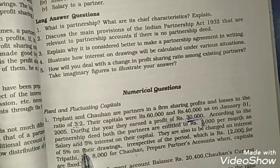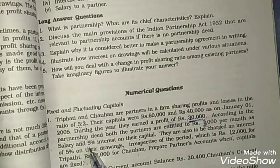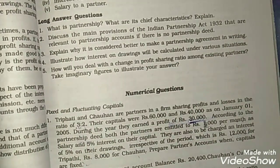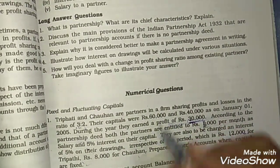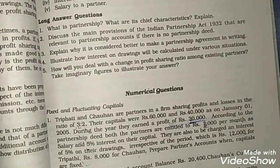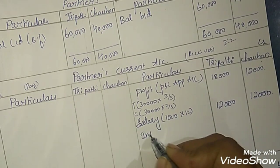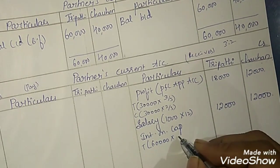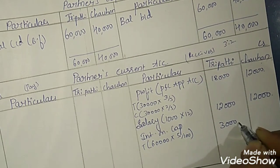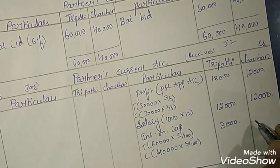Interest on capital is 5%. We know the capital amounts: 60,000 and 40,000, on which 5% interest has to be provided. The firm will provide 5% interest on capital to the partners because they have invested their money into the business. Since the partners receive this from the firm, it goes on the credit side as interest on capital. For Tripathi, 5% of 60,000 is Rs. 3,000. For Chauhan, 5% of 40,000 is Rs. 2,000.